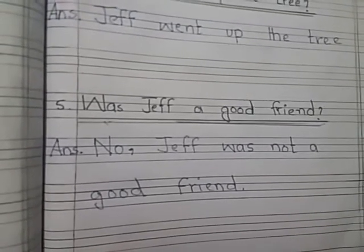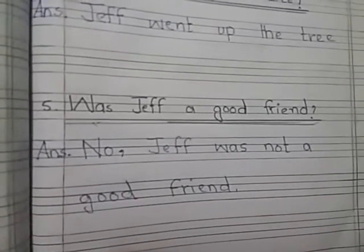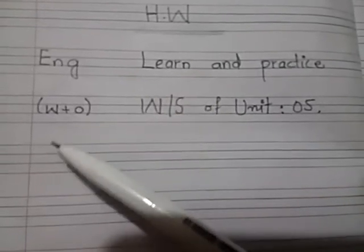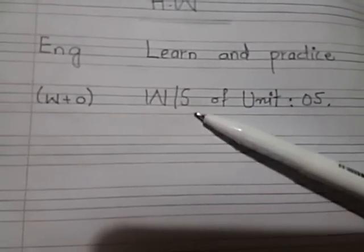We are done with our question answers. These were five question answers on page 23 of unit 5. Now note down your homework. Dear students, this is your homework for today, 30th April 2020 — written plus oral. After learning words meanings of unit 5, you will learn word sentences of unit 5 — the five word sentences we wrote yesterday. Your homework is to learn and practice word sentences of unit 5.